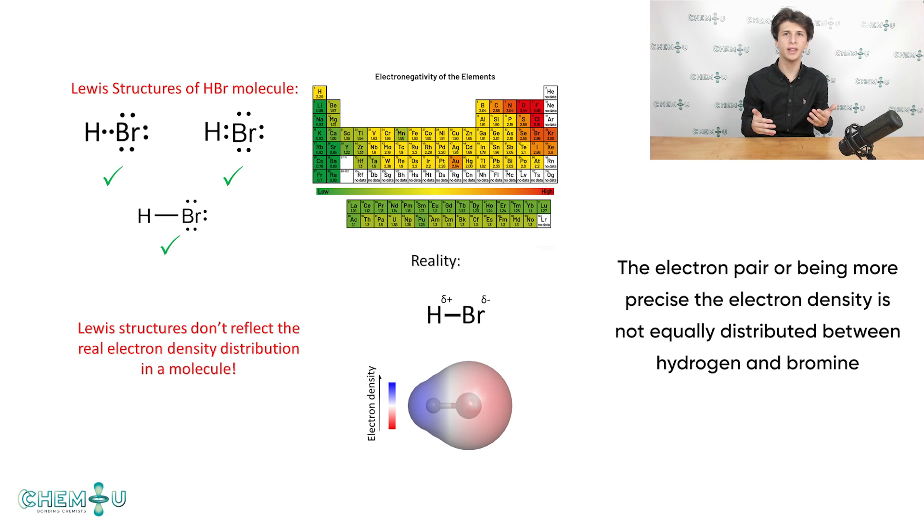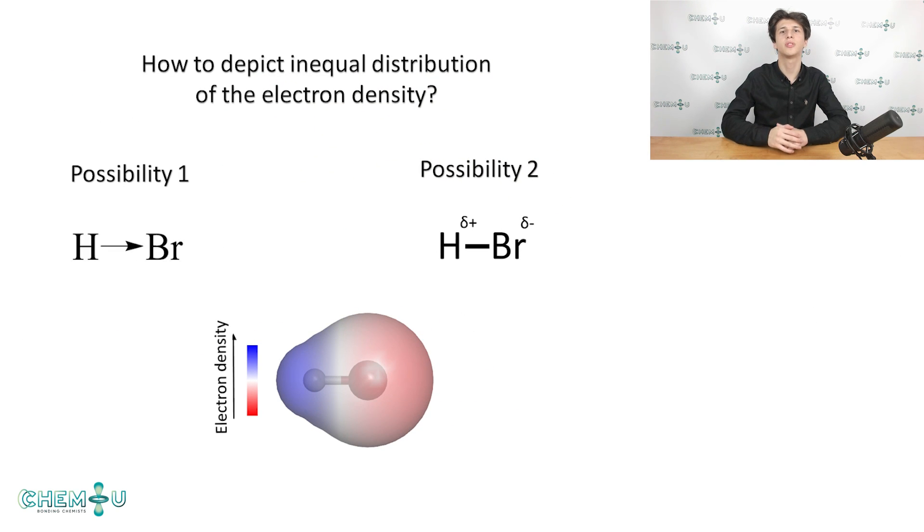Sometimes we are not really interested in the magnitude of partial charge. Instead, we just want to indicate that the electron density distribution is not equal. In this case, we just use these deltas with corresponding signs as shown on the right-hand side. Another way to show the polarity of the bond is to use arrows as shown on the left-hand side.